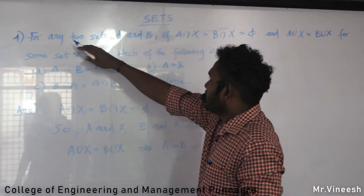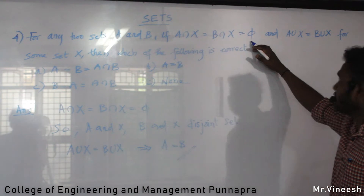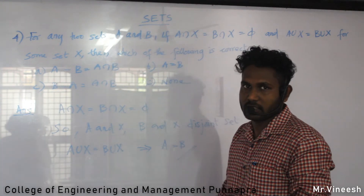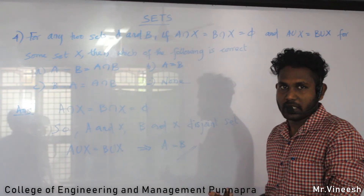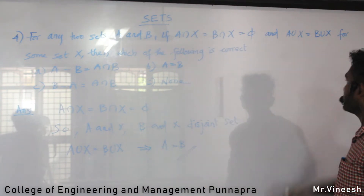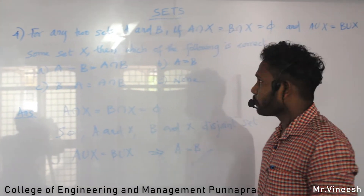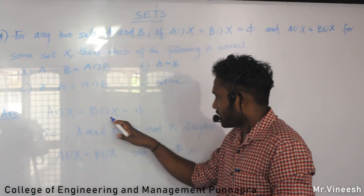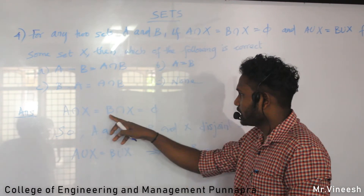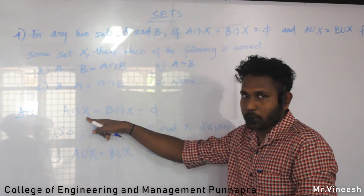For the 4th question: if A∩X = B∩X = empty set and A∪X = B∪X for some set X, then which of the following is correct? From A∩X = B∩X and A∪X = B∪X, we can conclude that A equals B.